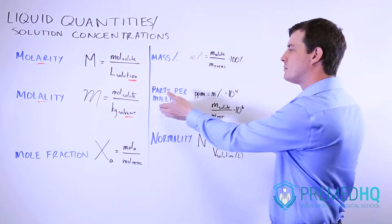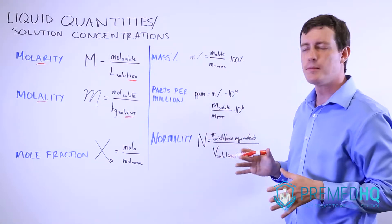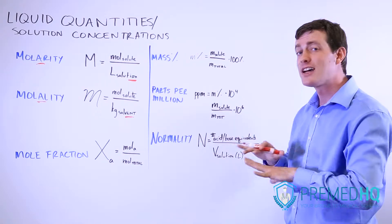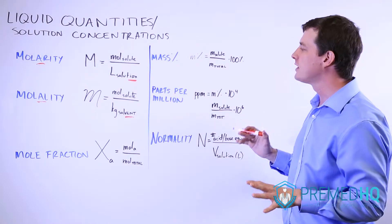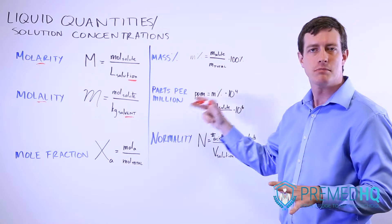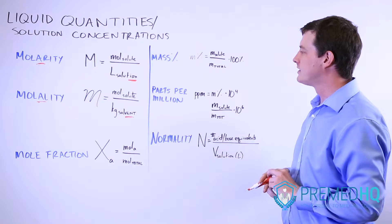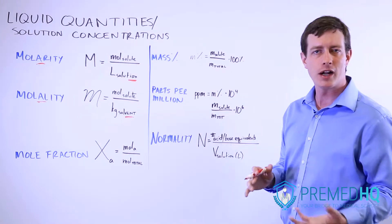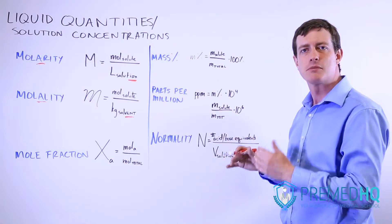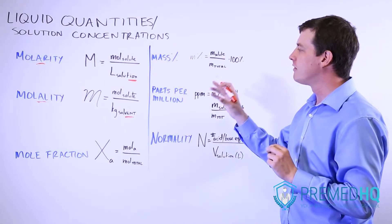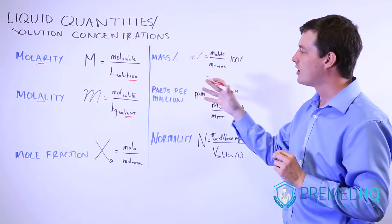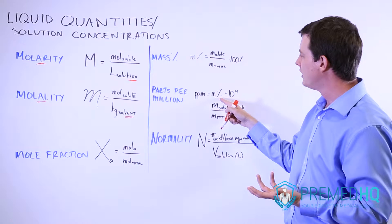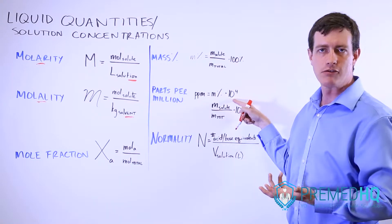The next one can sometimes be confusing: parts per million. Parts per million sounds like how many particles do you have per million particles, but that's not what it is. Parts per million is actually a mass-based measurement. It's per 1 million units of mass, 1 million grams, 1 million kilograms, how many of those units of mass are of a particular particle. So you can find parts per million by looking at mass percentage and multiplying that by 10 to the fourth.